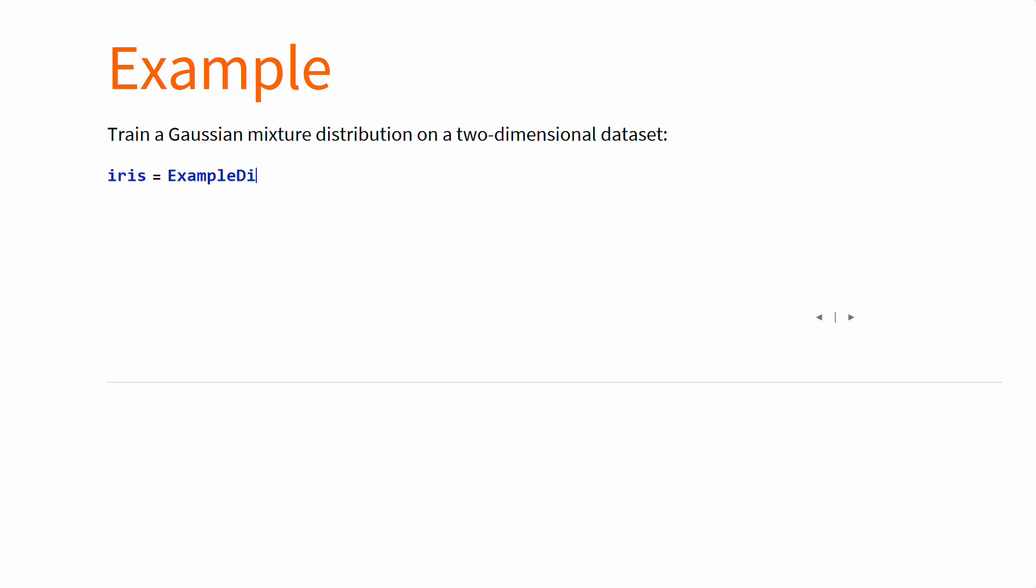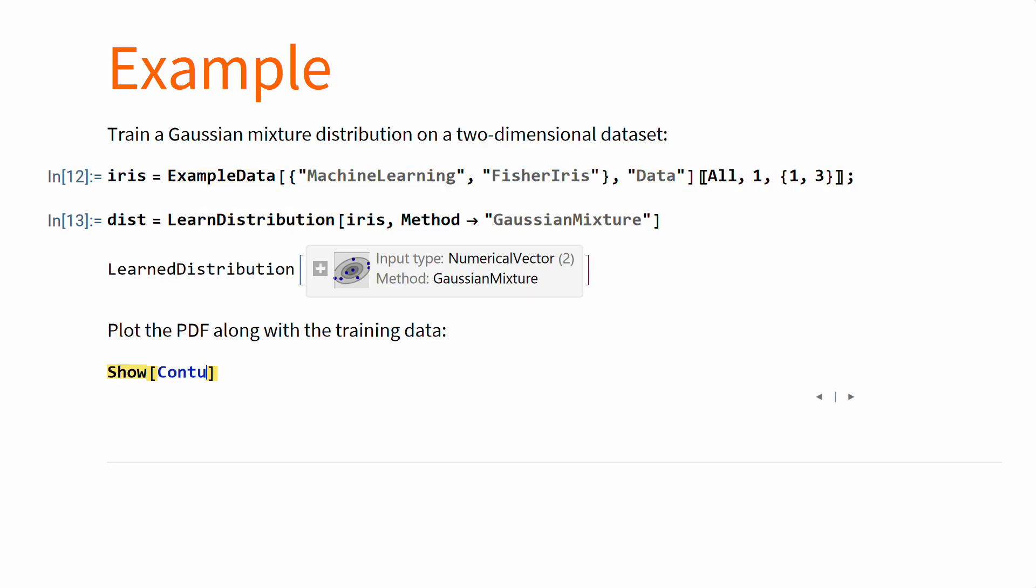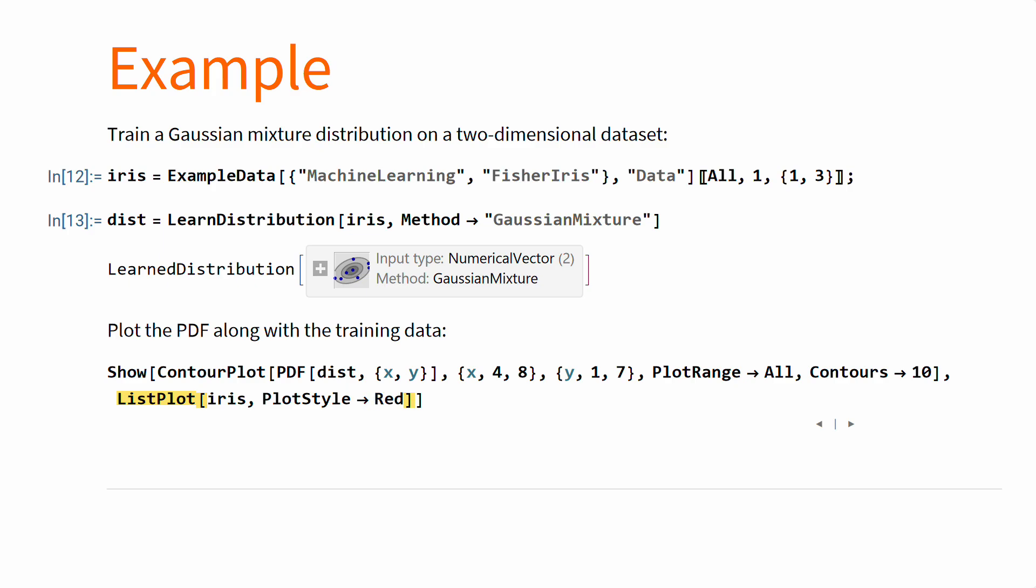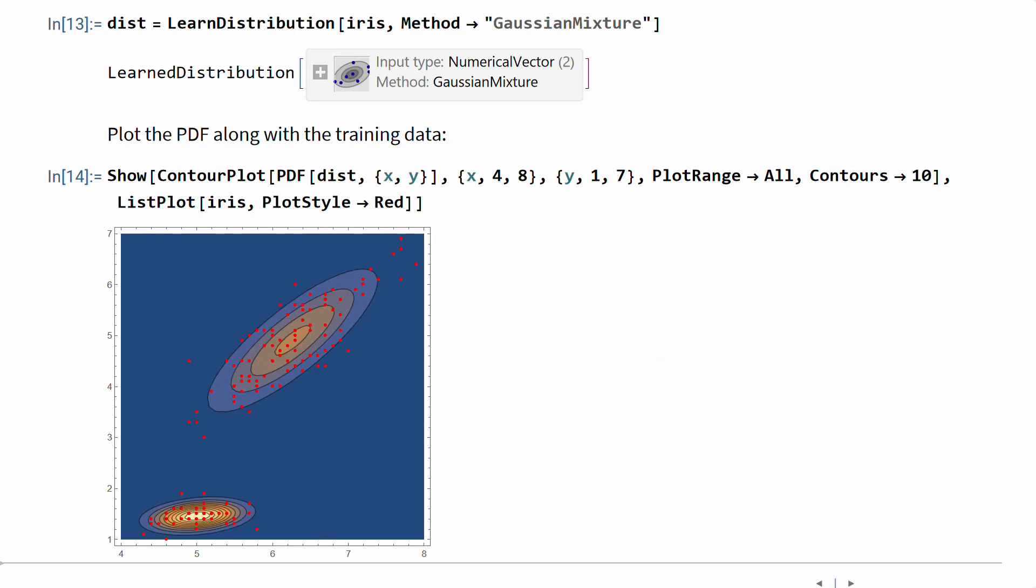For example, for two dimensions on the Fisher-Iris dataset, the Gaussian mixture can be learned and plotted along the data to show clear subpopulations.